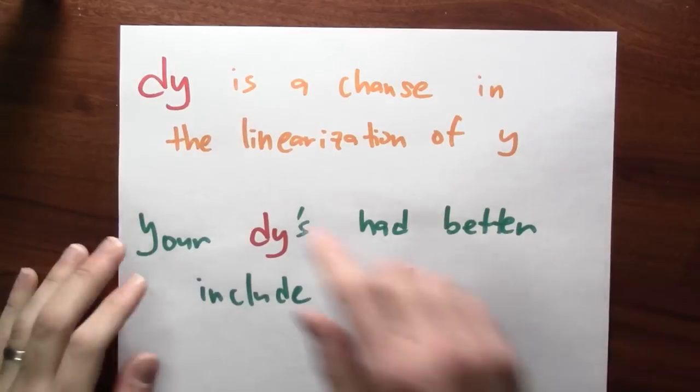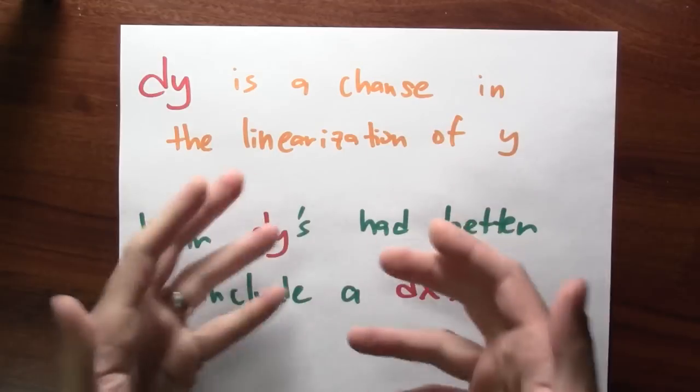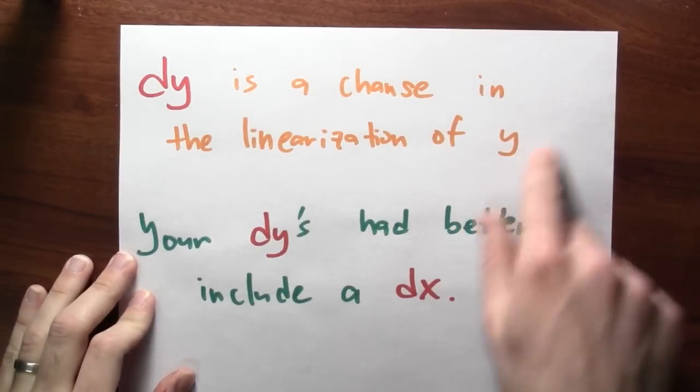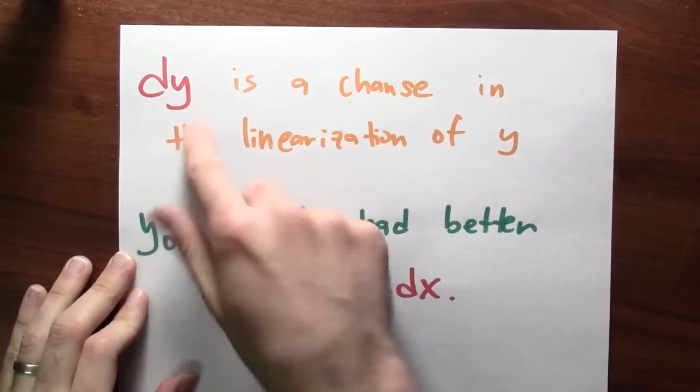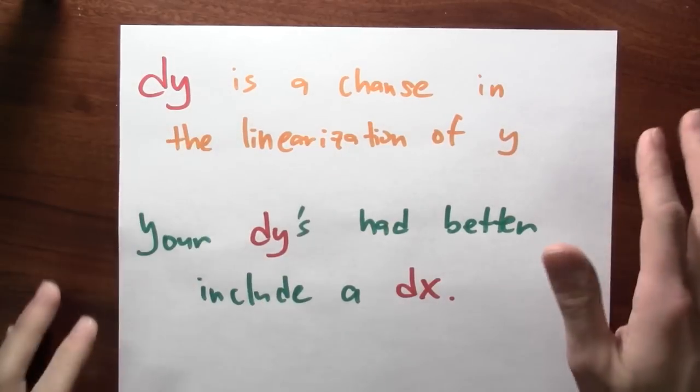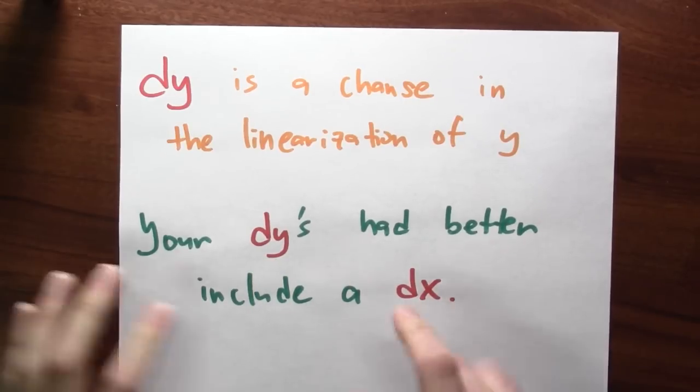Okay, here's a statement in words. In words, dy is a change in the linearization or the linear approximation or the tangent line approximation to this function that you're thinking of as y depending on x. That's what dy is. I should emphasize that your dy's had better include dx in there somewhere.